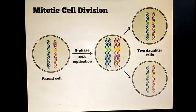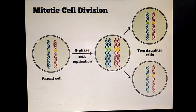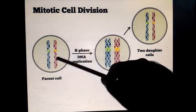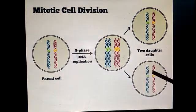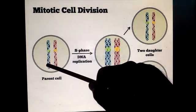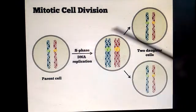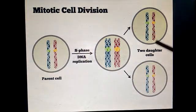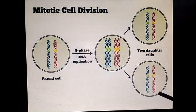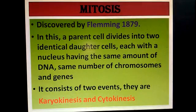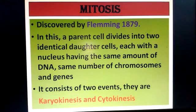In cytokinesis, a single cell divides into two daughter cells with an equal number of chromosomes. This is the cell division process. Next, we will learn about mitosis.